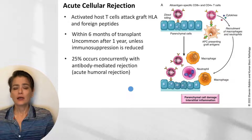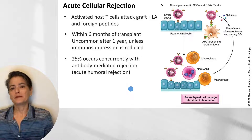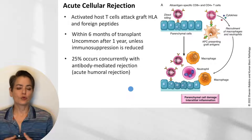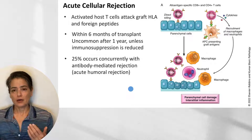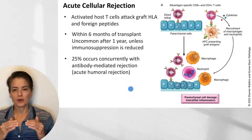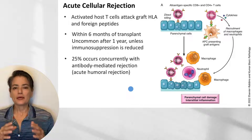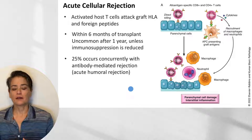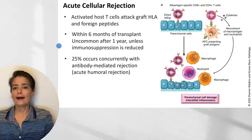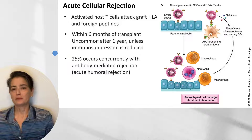You don't typically get acute cellular rejection years later, with one exception: if a patient who has had a graft for several years and is doing well has their immunosuppression weaned to the lowest level possible — which is best for the patient as it reduces risk of opportunistic infections — then they can get acute cellular rejection even three to five years after organ transplantation.